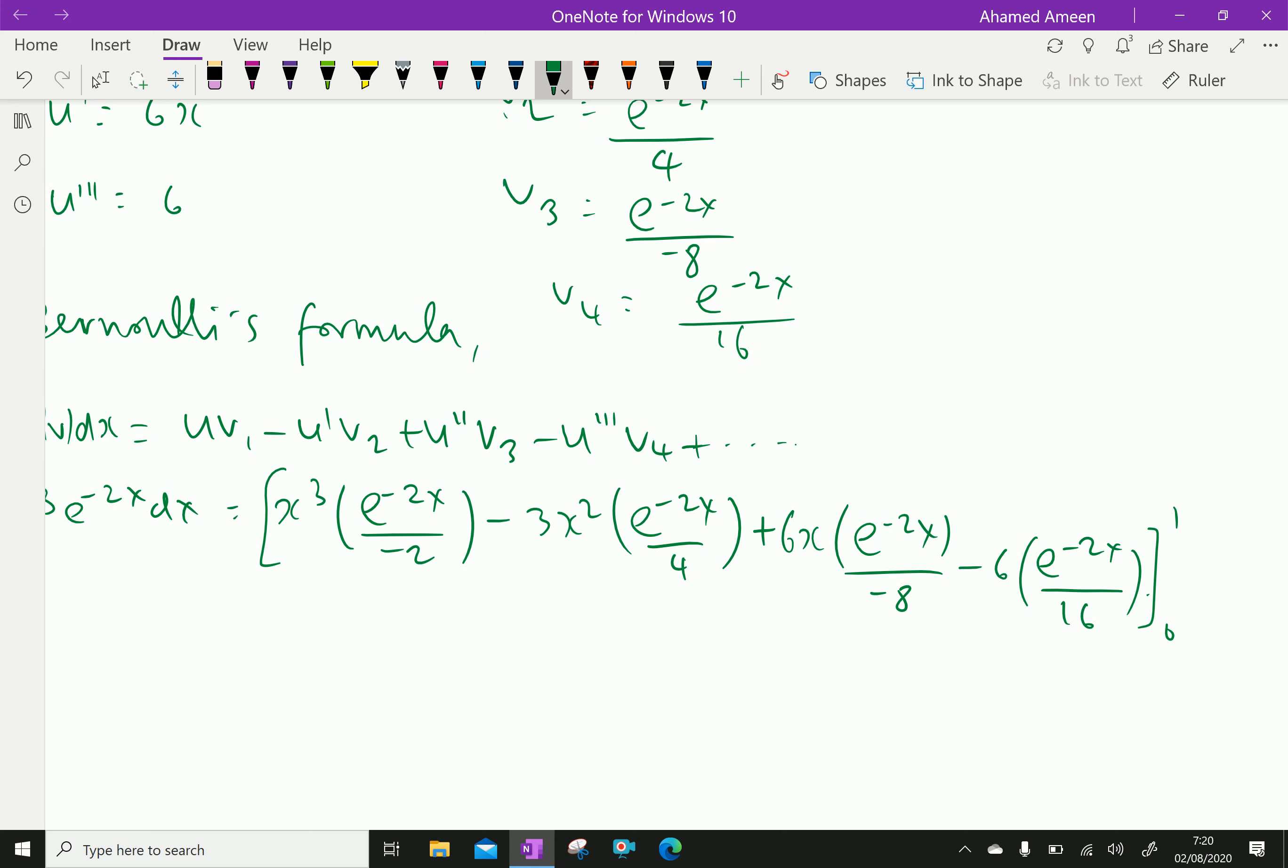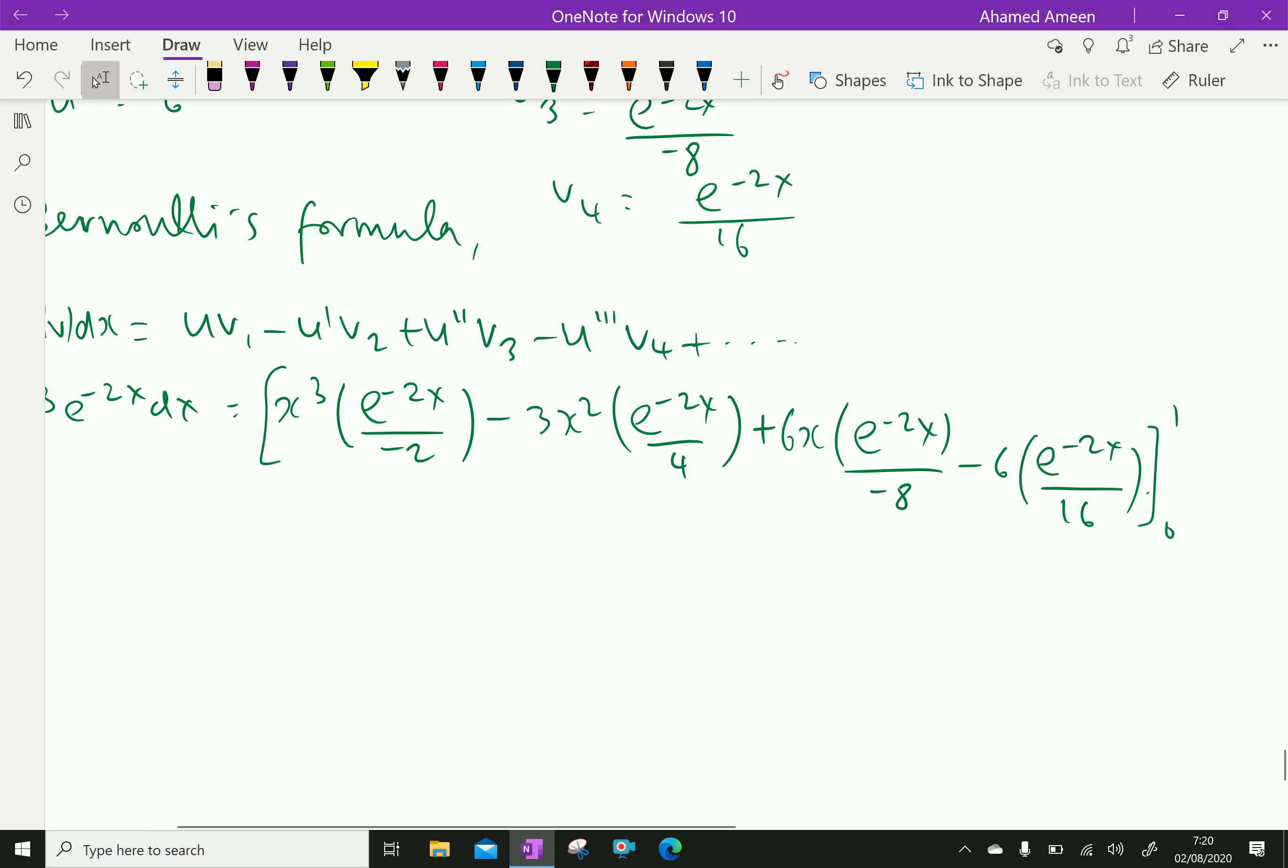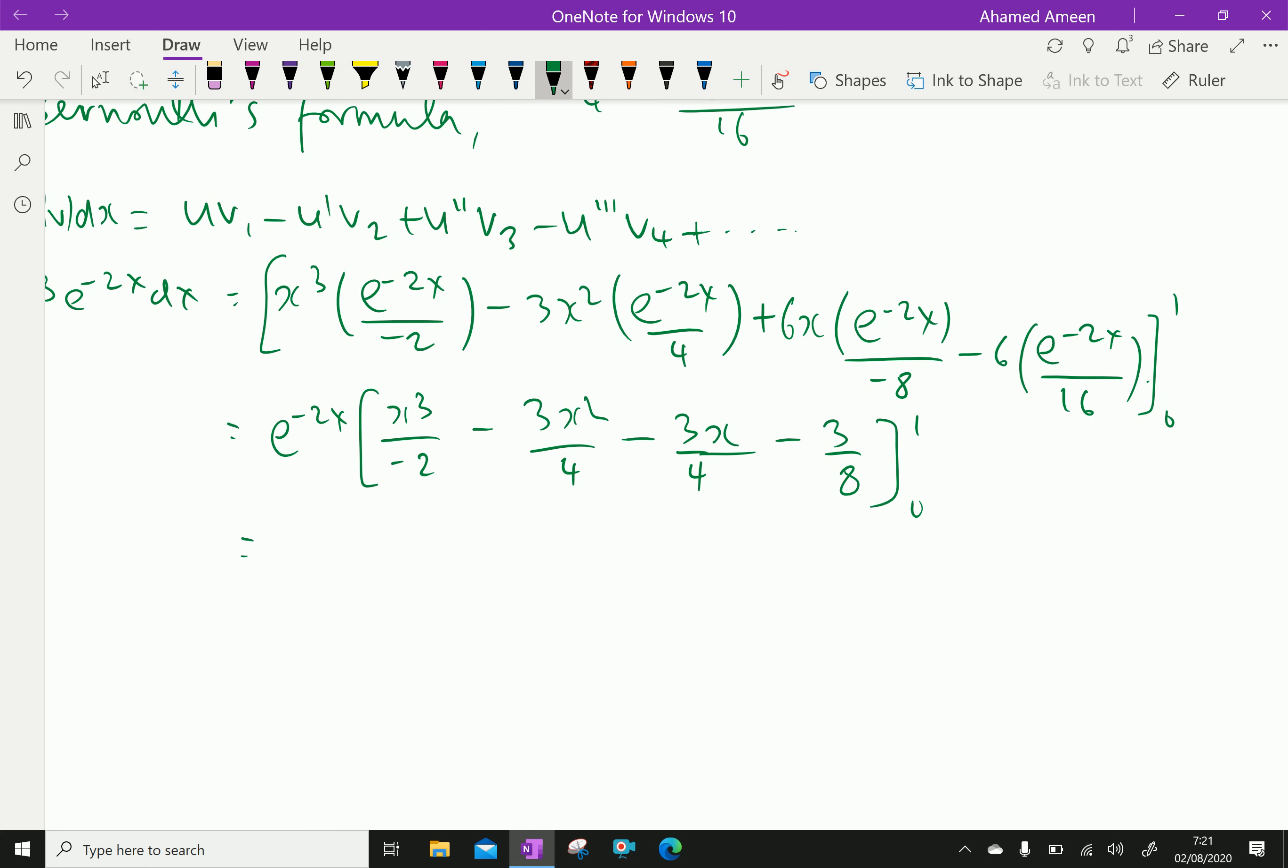Now, first, we will take common e power minus 2x. We get e power minus 2x times x cube over minus 2 minus 3x square over 4 minus 3x over 4 minus 3 by 8, from 0 to 1. Now, we will apply the limit values.